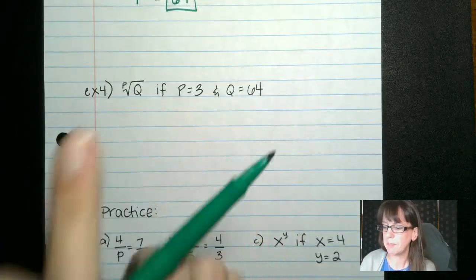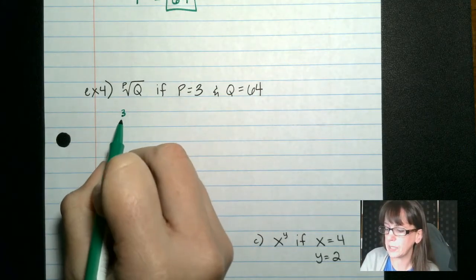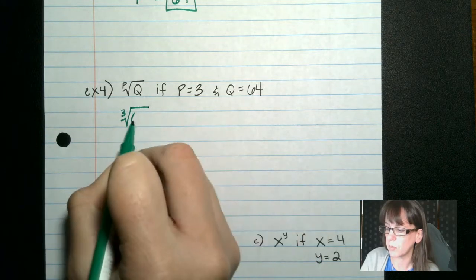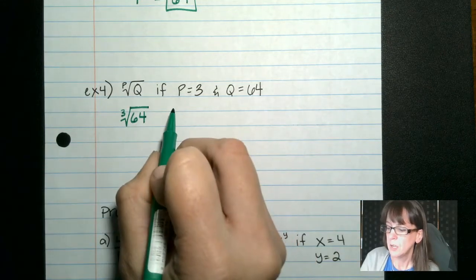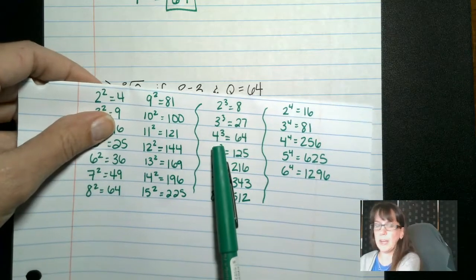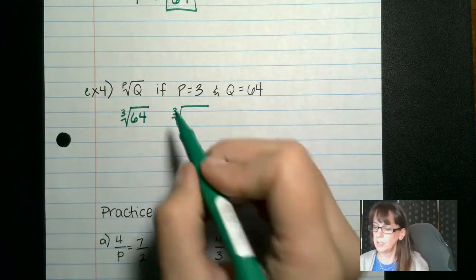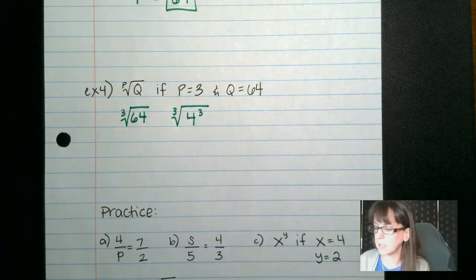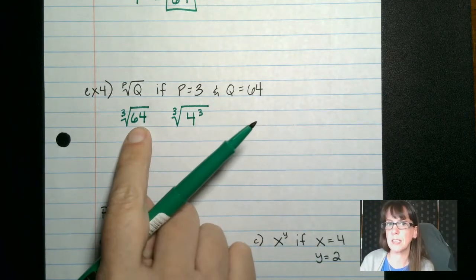What about if p is 3, and then q is 64, the cube root of 3. So we look at our cheat sheet under our perfect cubes, and we look for 64, and we see, oh, hey, 4 to the 3rd power. 4 to the 3rd power gives us 64. So 4 to the 3rd is the same as 64.